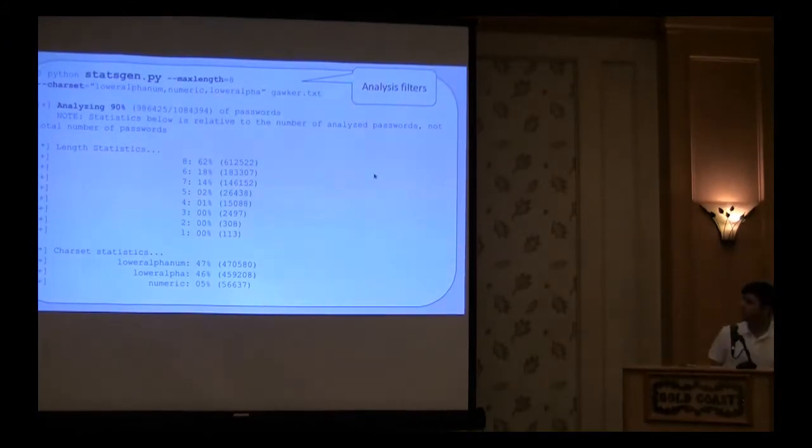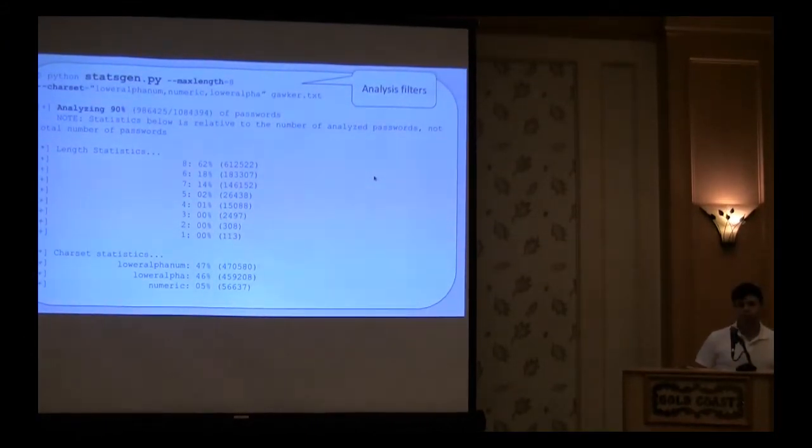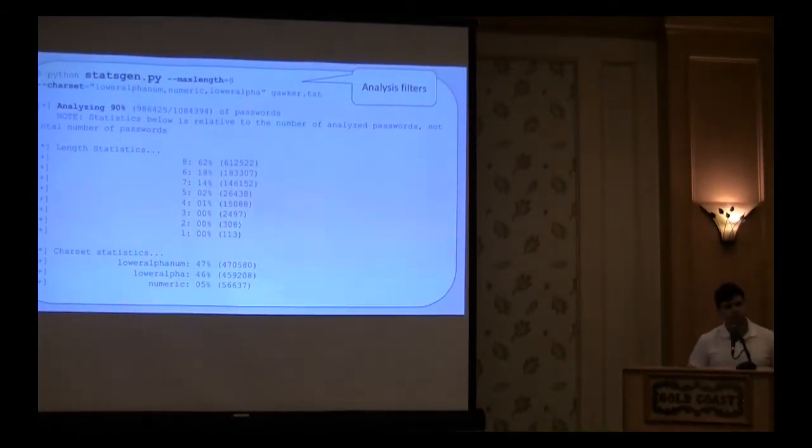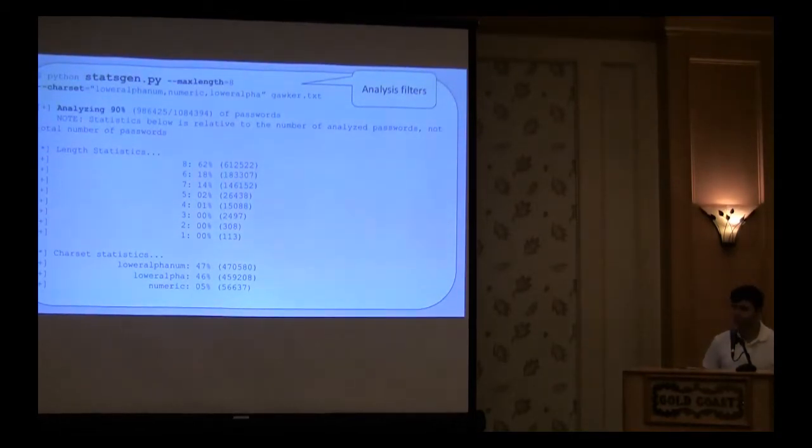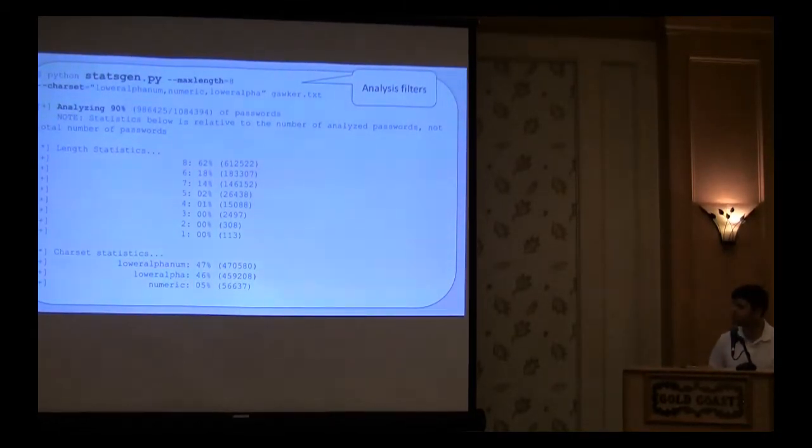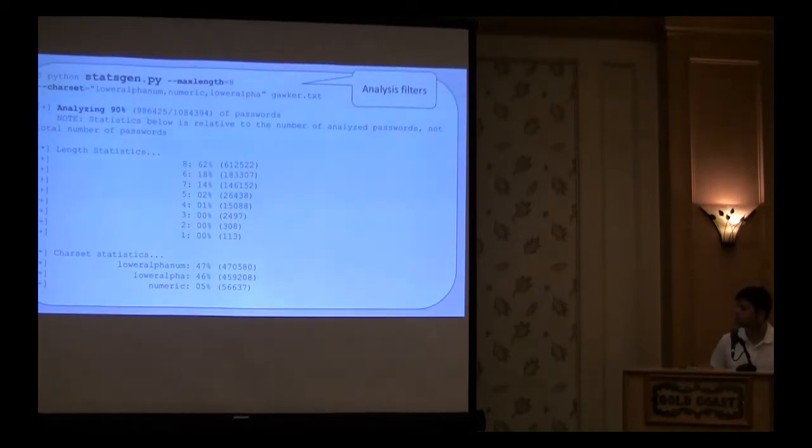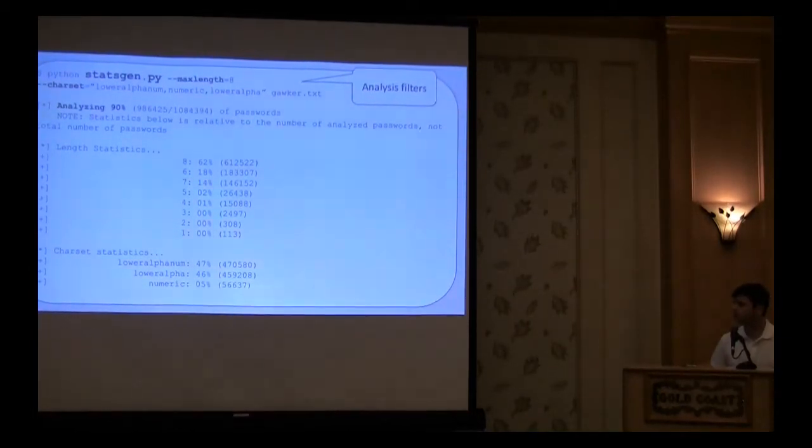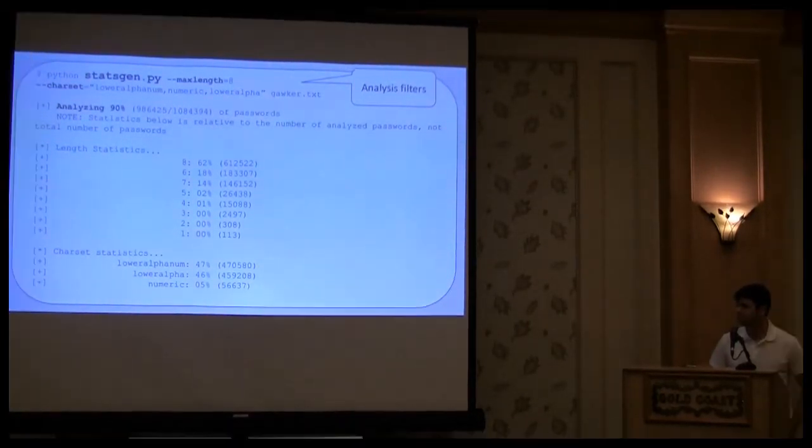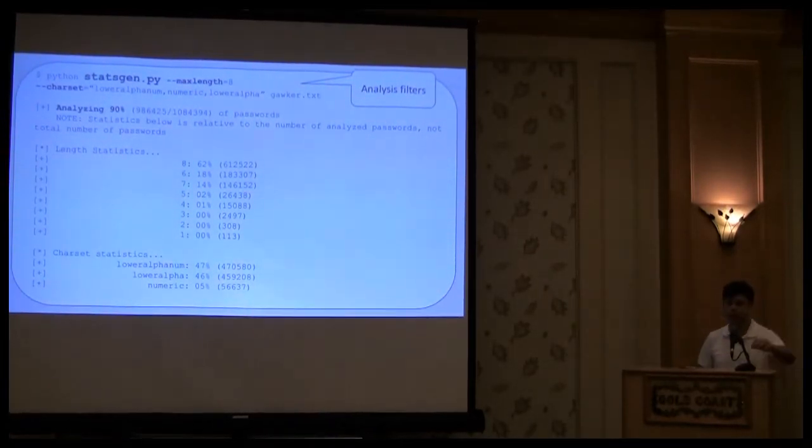At the same time, you can, with StatsGen, perform filters to see how well your coverage works. You can say maximum 1 to 8 characters, define character set that you want to use. And it will basically say, okay, for Gawker, given that character set, your coverage is 90%, and it will give you corresponding stats for that filter.